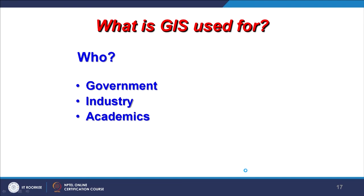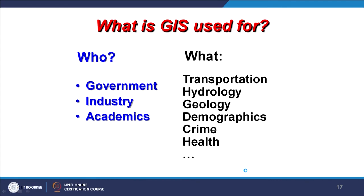Who are the users of GIS? Government at different levels — state, central, or federal — uses GIS. Industries use GIS. Academicians also use GIS. Applications include transportation — the example of taxi fleets; Indian Railways has already completed installation of GNSS receivers on a GIS platform to know the location and movement of every engine. Applications also include hydrology, geology, demographics, crime, and health. This is a non-exhaustive list — more and more bridges with different disciplines are being developed related to GIS.